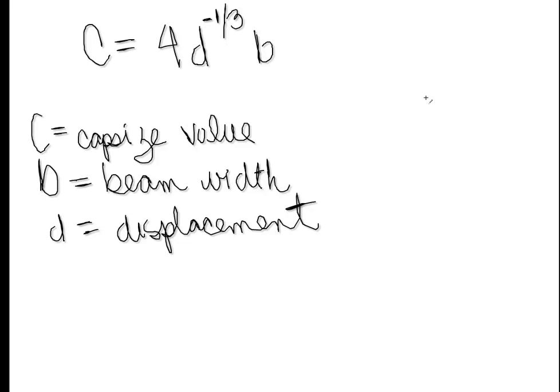To be considered safe for ocean sailing, the capsized screening value C should be less than 2. For a boat with a beam or width B in feet and displacement D in pounds, C is determined by this function. I have the function up here on the screen: C is equal to 4 times D to the negative 1/3 power times B.